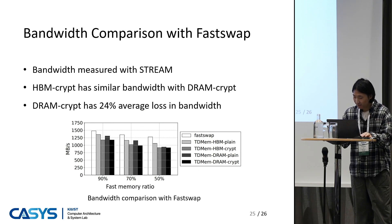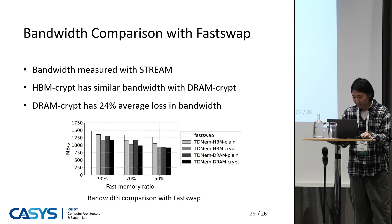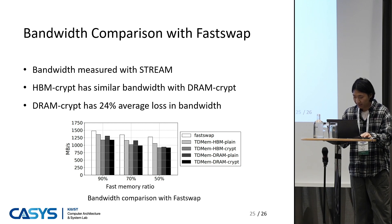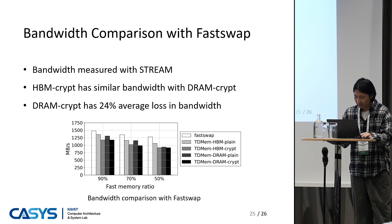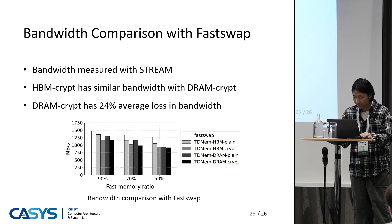In this experiment, we measure the memory bandwidth of TDMEM and compare it with FastSwap. The memory bandwidth is measured with a stream benchmark. The memory bandwidth gap between TDMEM-HBM crypt and TDMEM-DRAM crypt is negligible, implying that the major bottleneck for the bandwidth is not the memory. The bandwidth loss of TDMEM-DRAM crypt compared to FastSwap is 24% on average for all fast memory ratios. The maximum memory bandwidth is reduced for our prototype, so we require further optimizations of the data path implementation on the FPGA board.